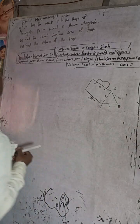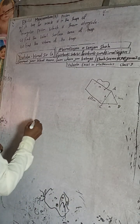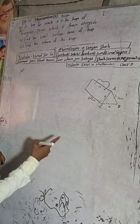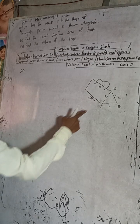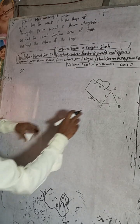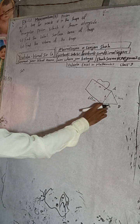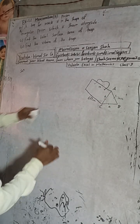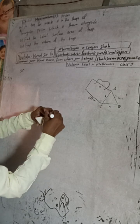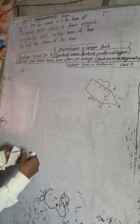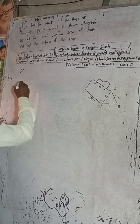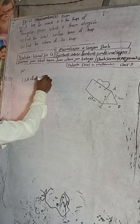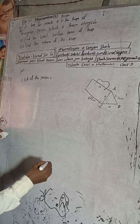Now the lateral surface area. In the solution, total surface area means lateral surface area plus the area of the triangular bases. I will first find the lateral surface area of the prism. I will derive the formula here.